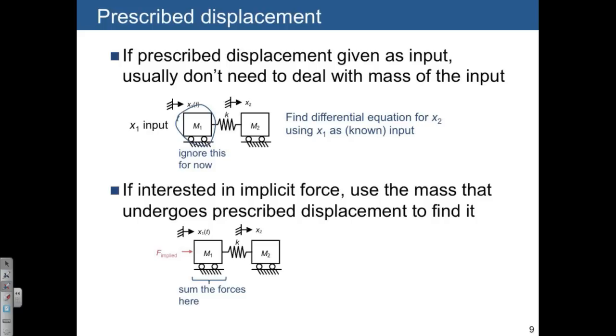So just to summarize, when we have a system like this, finding a differential equation for X2 with a prescribed displacement, we get away with ignoring one of the masses or the end of the spring or damper at first. But if we were interested in that force, we would be able to use that mass plus drawing in the implicit force and summing the forces on this object to come up with that second equation.